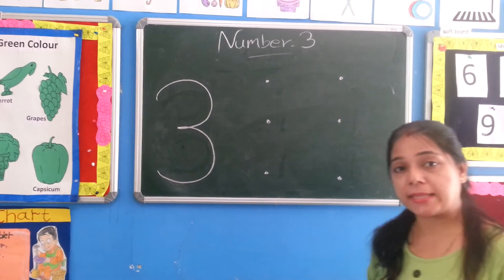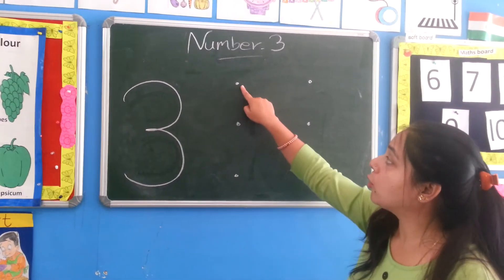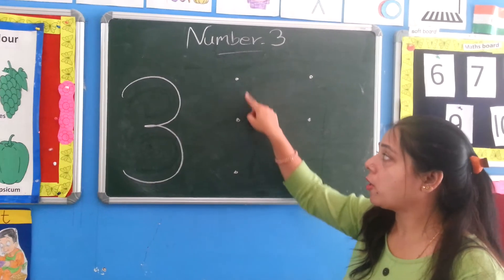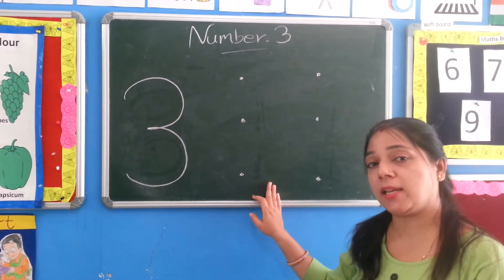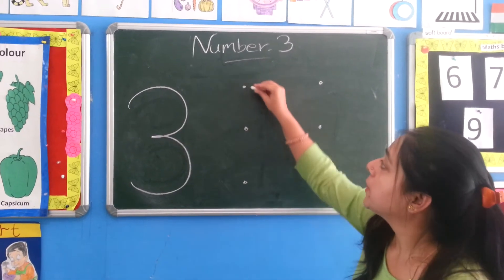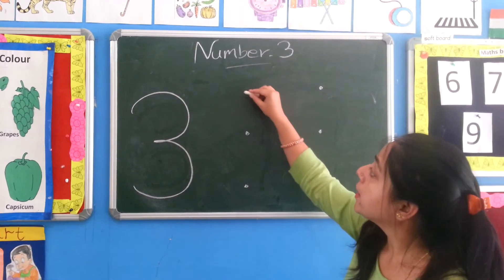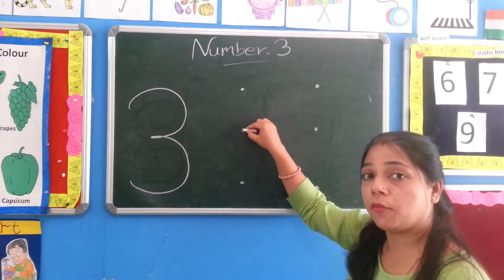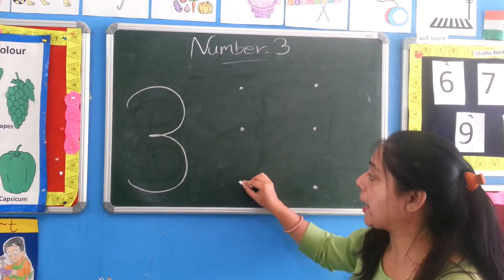Now we call 3 numbers. Now we have dots here. How many dots do you have? See, here we have 1, 2, and 3 dots. Here we have a curve and here we have a curve.